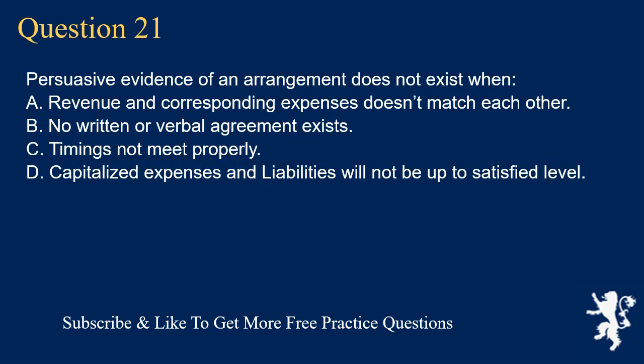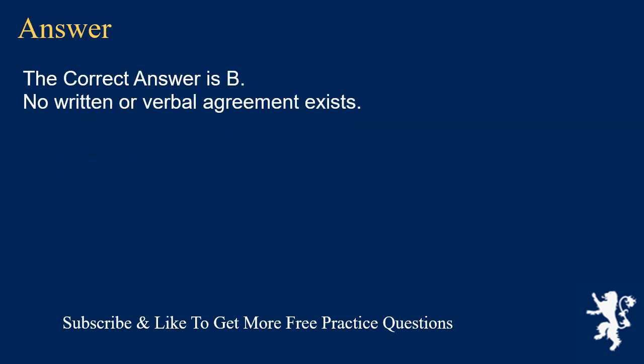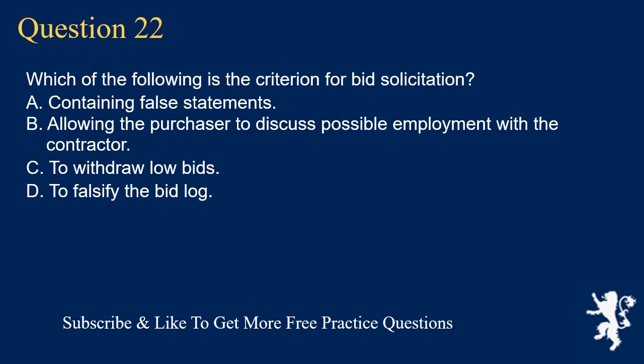Question 21: Persuasive evidence of an arrangement does not exist when: A. Revenue and corresponding expenses don't match each other. B. No written or verbal agreement exists. C. Timing is not met properly. D. Capitalized expenses and liabilities will not be at a satisfied level. The correct answer is B. No written or verbal agreement exists.